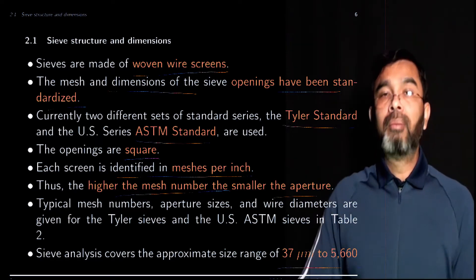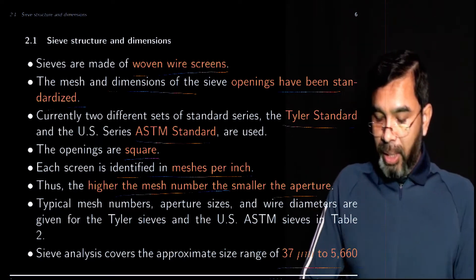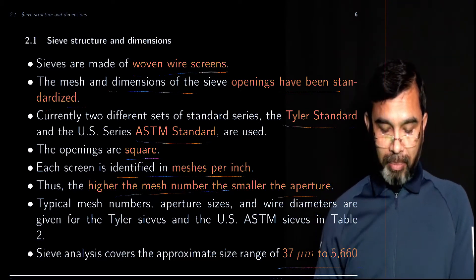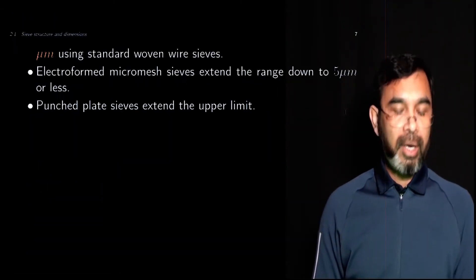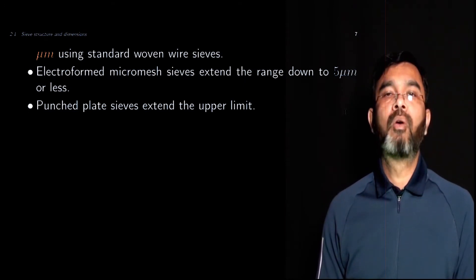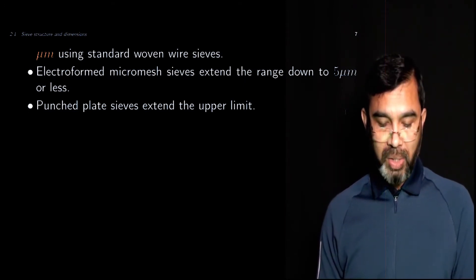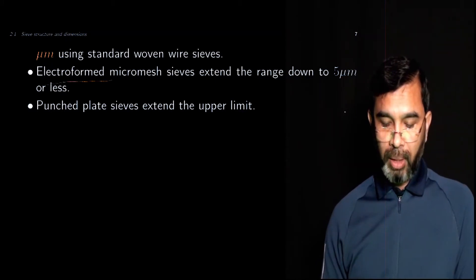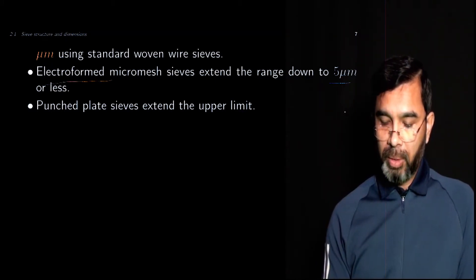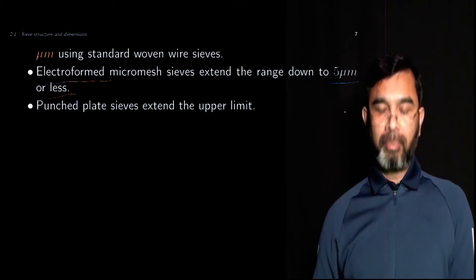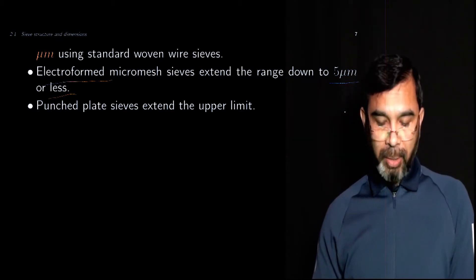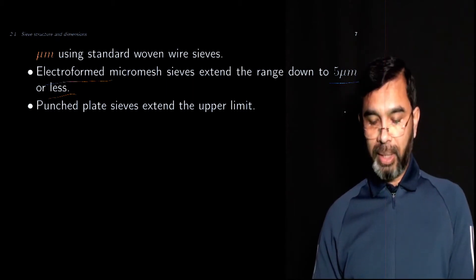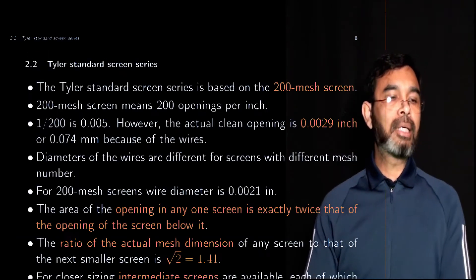The higher the mesh number, the smaller the opening. Sieve analysis is used for particles between approximately 37 microns and over 5.6 millimeters — this size range is for woven wire screens. Electroformed micro-mesh screens can be used to measure smaller particles, and punch plates are used to measure particles larger than this range.